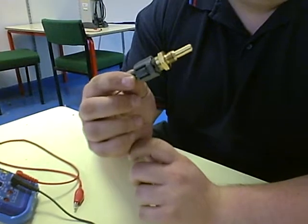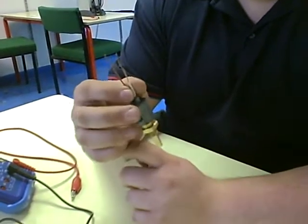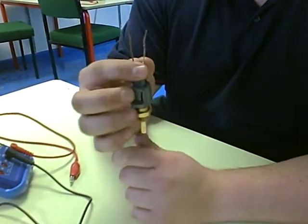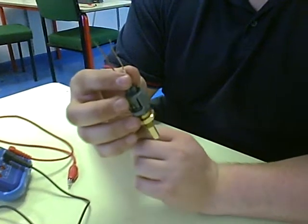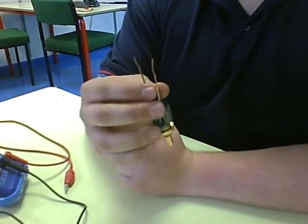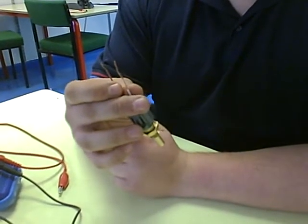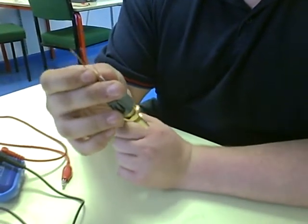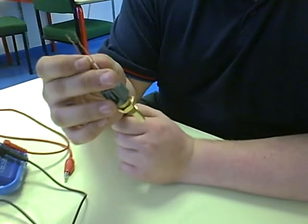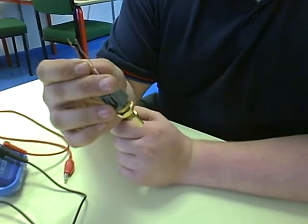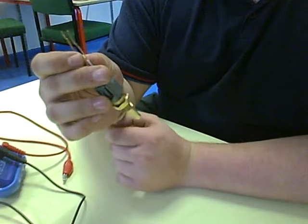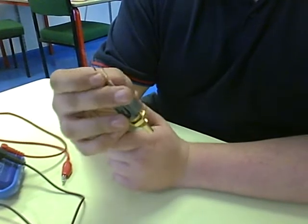The THW works by being supplied a 5 volt feed known as voltage constant. As the THW heats up, the resistance in the THW changes so more or less voltage is consumed.